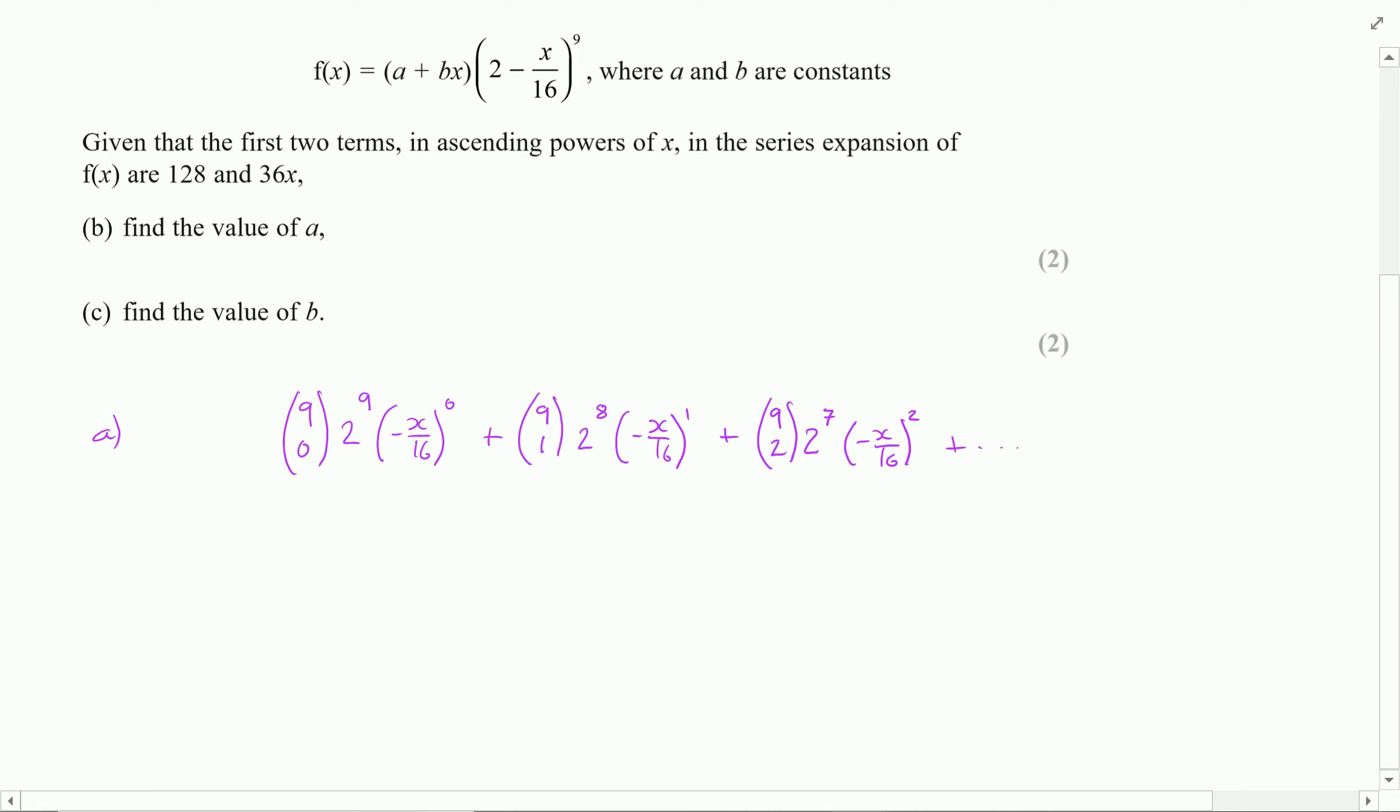Now working these out individually, 9 choose 0 is just 1, 2 to the power of 9 is 512 and anything raised to the power of 0 is just 1.